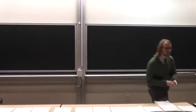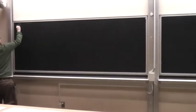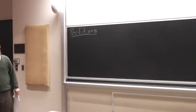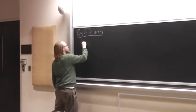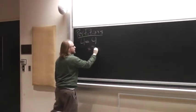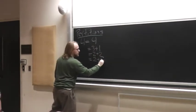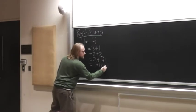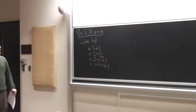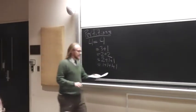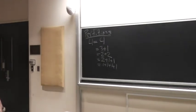Without further ado, as in every partition talk, I must define partitions in case you haven't seen them before. To show the partitions of four: how many ways can we write four as the sum of positive integers where we don't care about order? There are five ways to write four. There are lots of things that we can do with partitions.